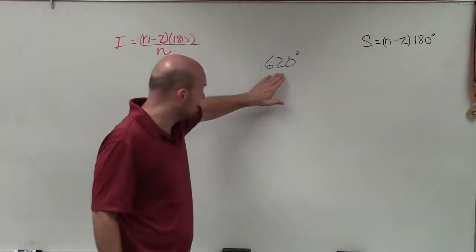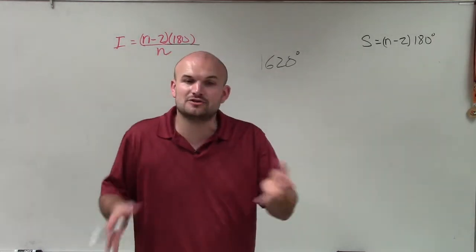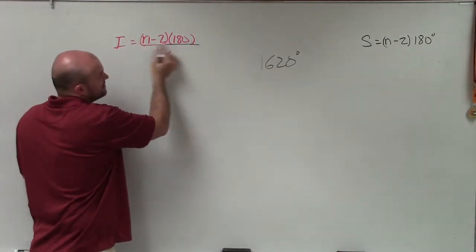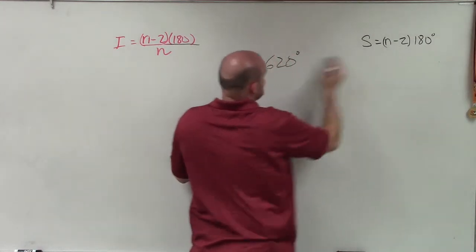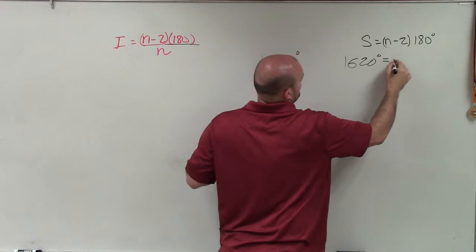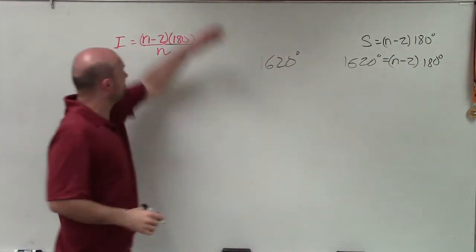So if I'm given the sum is 1,620, that means all the angles are evenly divided. So the formula that we have is pretty much you can see here. Here represents the sum of all the interior measures, which is 1,620. And notice that same formula is right here.